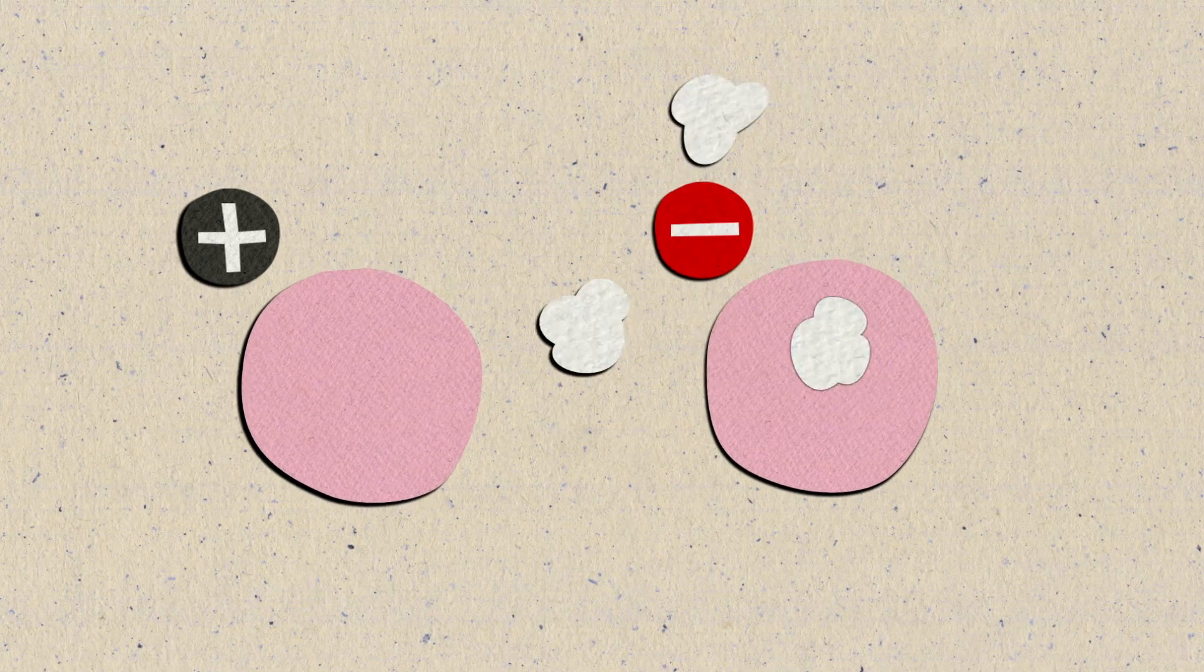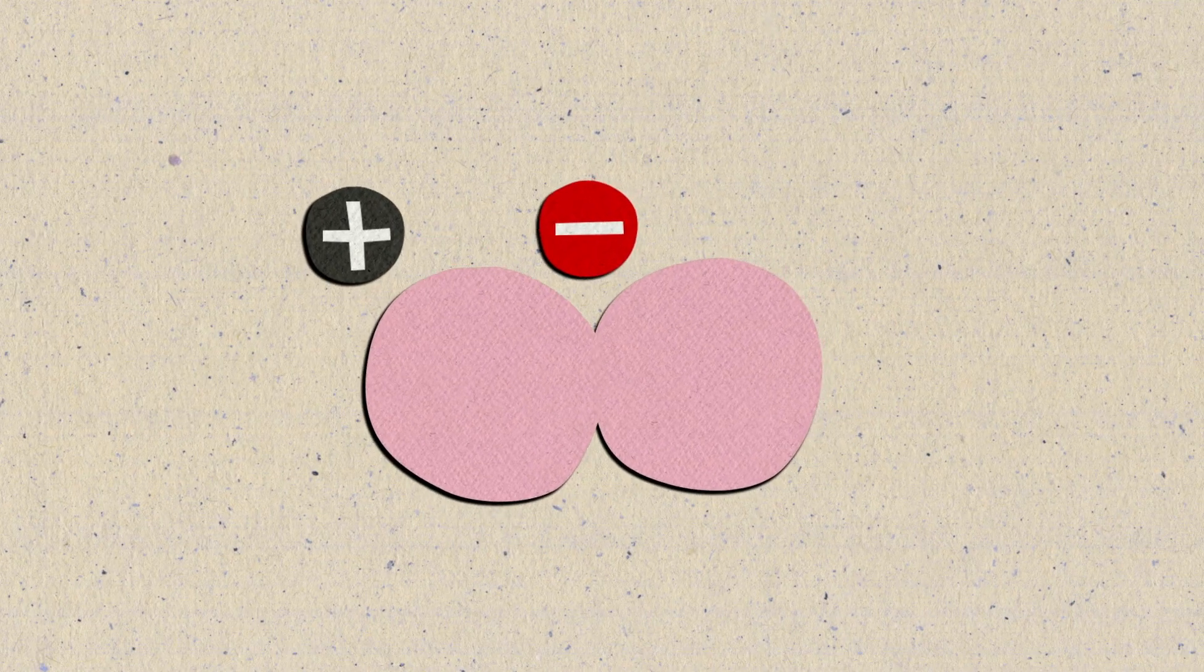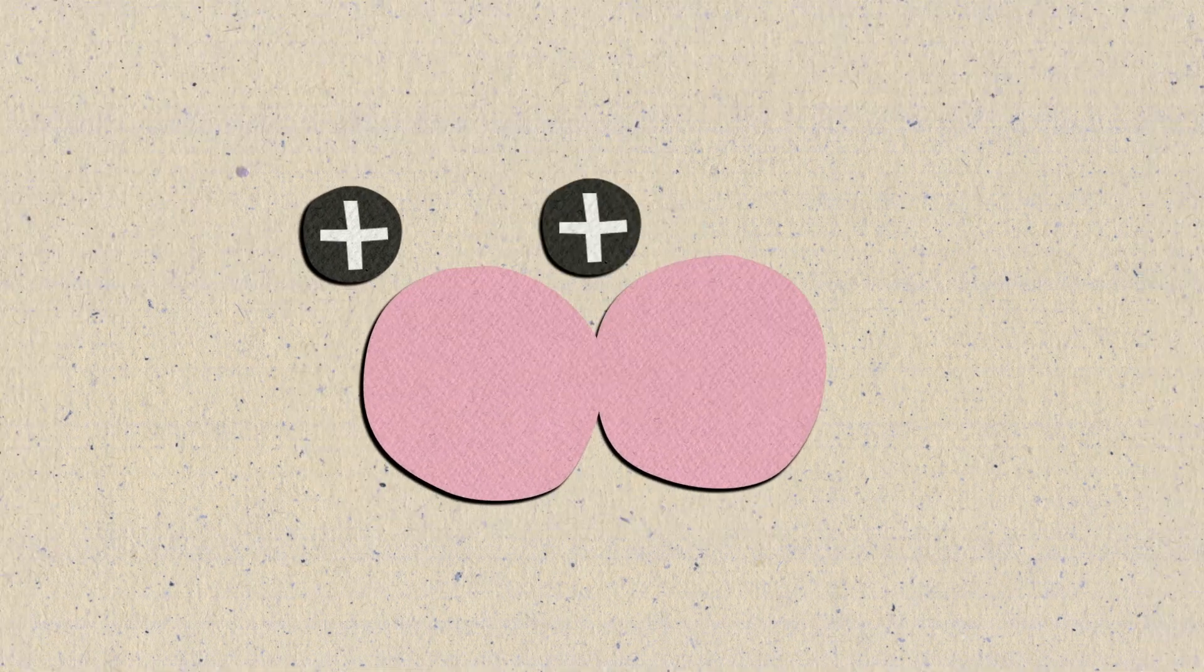Charge is one of the basic properties of matter that causes it to experience forces. There are two types of electric charge, positive and negative. Matters of opposite charge attract each other whereas matters of same charge will repel each other.